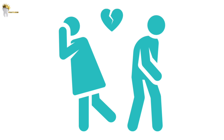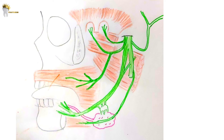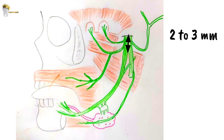This main trunk of the mandibular nerve remains undivided for only 2–3 mm before it splits into a small anterior division and a large posterior division.